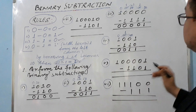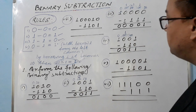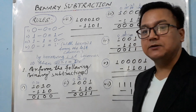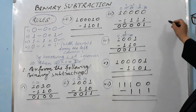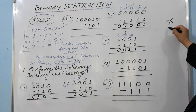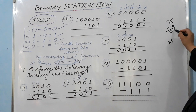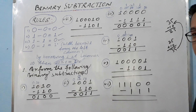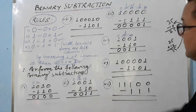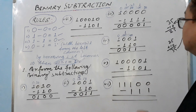And one more thing — you can verify these questions by adding back. Just like for decimal: 35 minus 10 gives 25, and to verify, 25 plus 10 equals 35. If you get back 35, the subtraction is correct. You can apply the same verification method to binary subtraction.